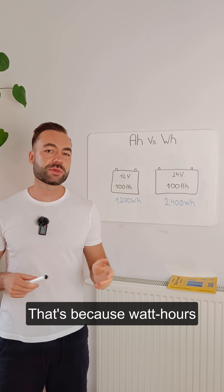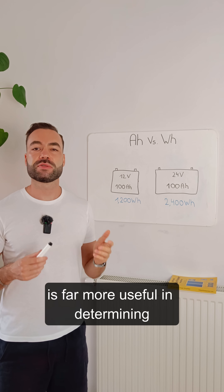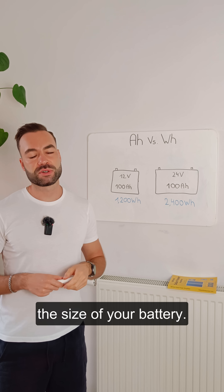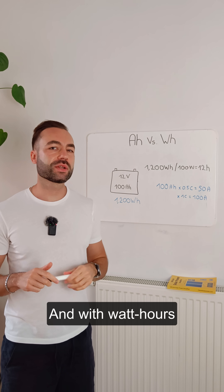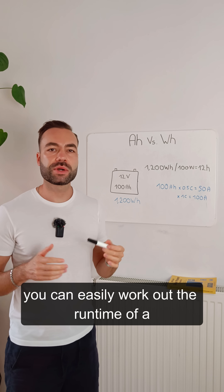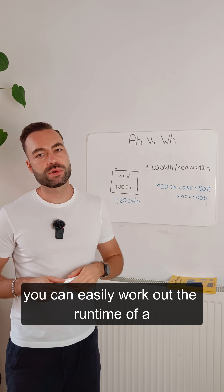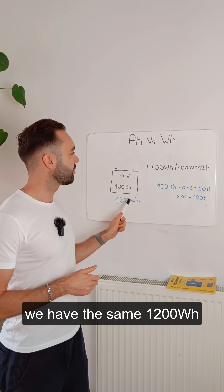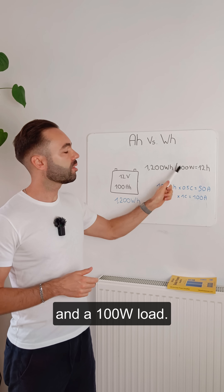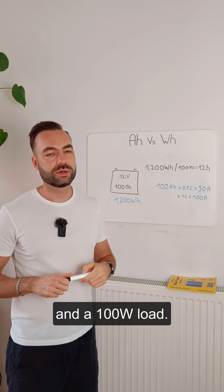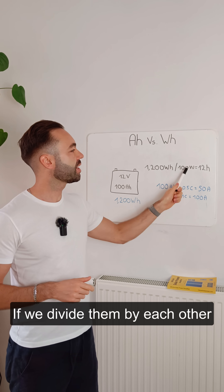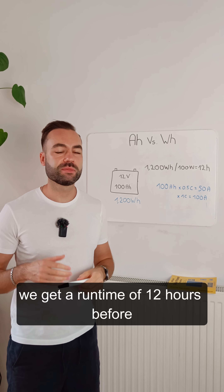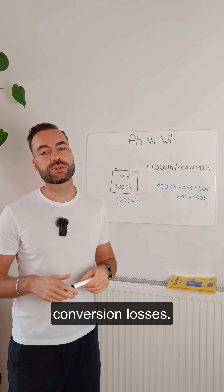That's because watt hours is far more useful in determining the size of your battery. With watt hours you can easily work out the runtime of a device. Let's say we have the same 1200 watt hour battery and a 100 watt load — if we divide them by each other we get a runtime of 12 hours before conversion losses.